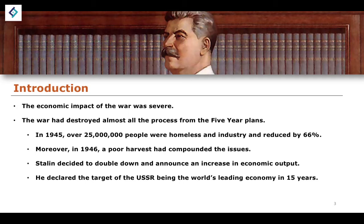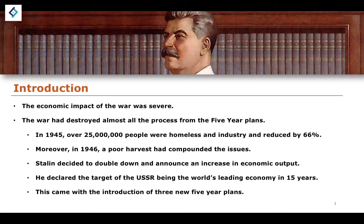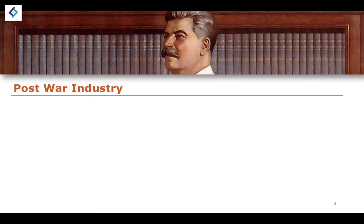Stalin declared that the target for the USSR was to become the world's leading economy within 15 years. Whereas the target for the earlier five-year plans was to make up for what Stalin believed was a 100-year decline, this new economic output was to allow the USSR to become the world's leading economy within 15 years. This came with the introduction of three new five-year plans.